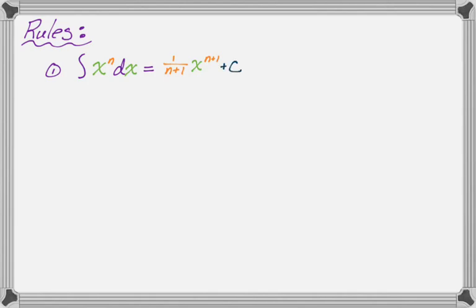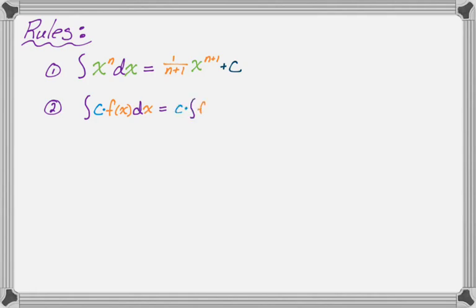That's how you reverse the power rule. Another rule we're going to use is the constant multiple rule: the integral of c times f(x) dx is equal to c times the integral of f(x) dx. So you can factor a constant multiple out.